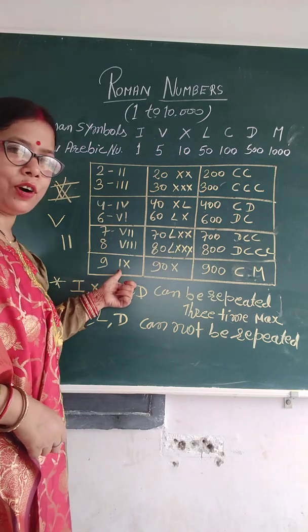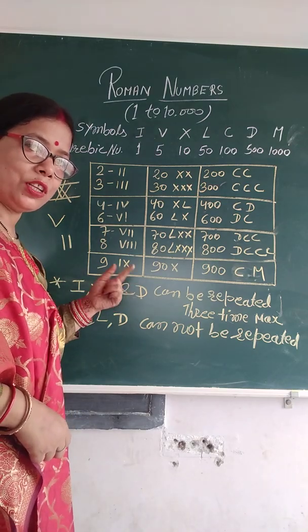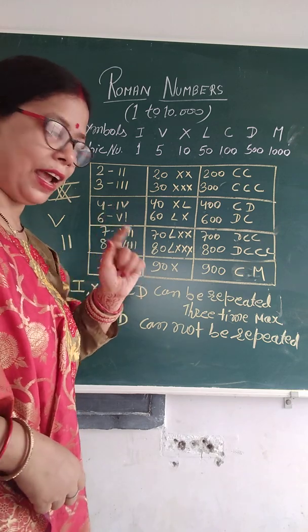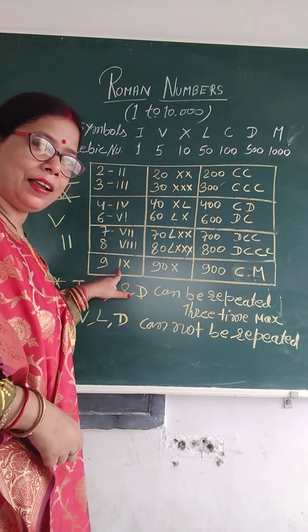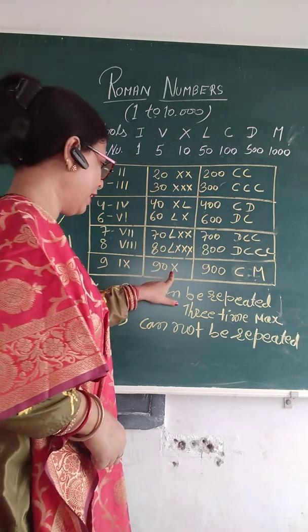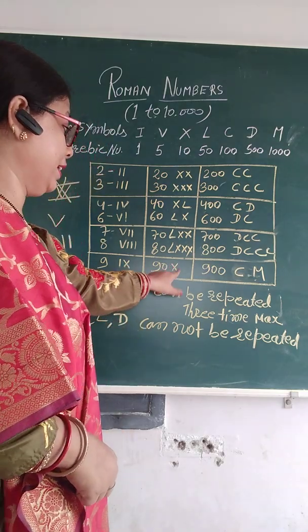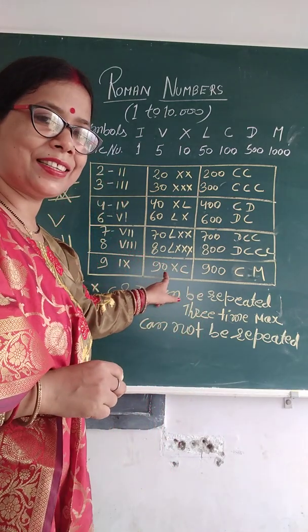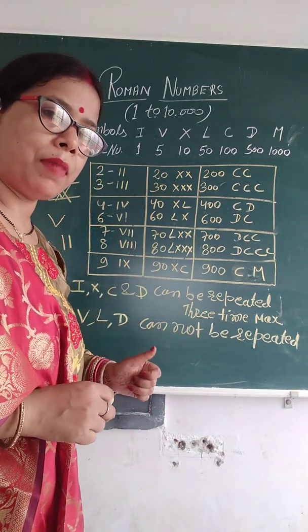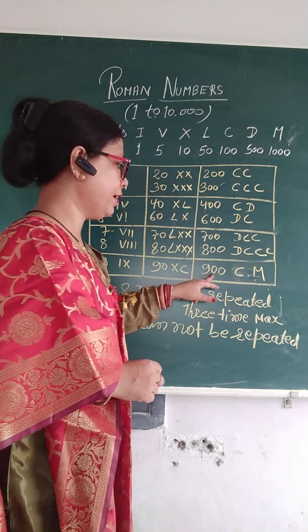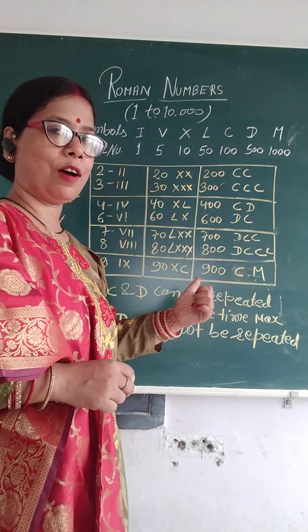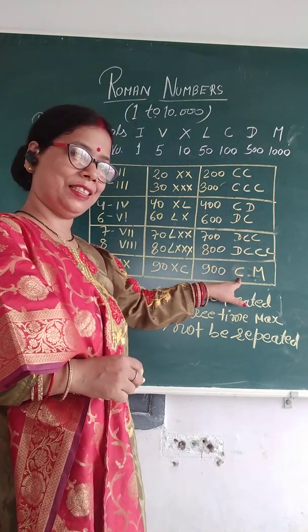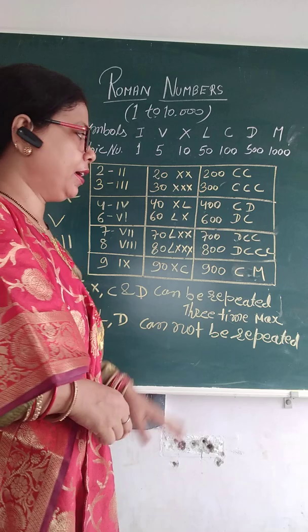X for 10, and I placed before it — because 10 minus 1 is 9 — so IX means 9. For 90: C for 100 and X placed before it, XC, because 100 minus 10 is 90. And for 900: 1000 minus 100, C placed before M, CM means 900.